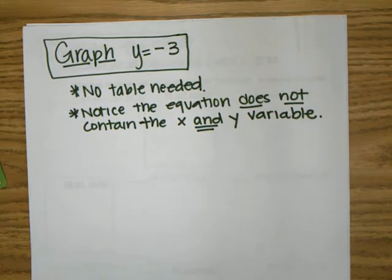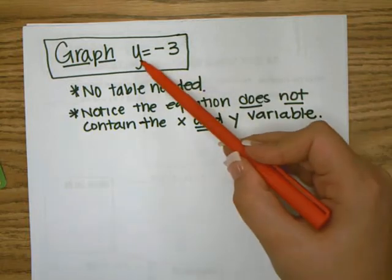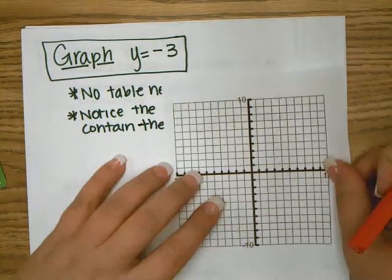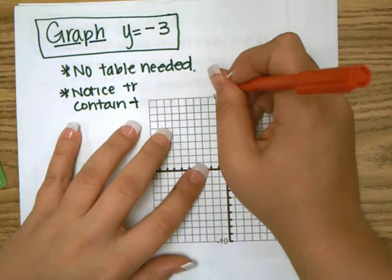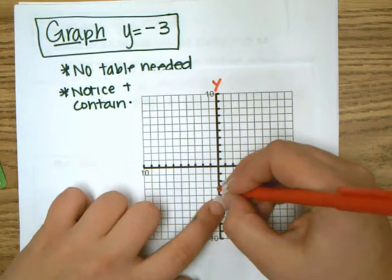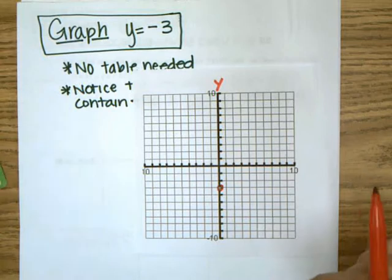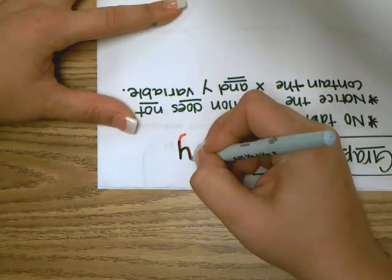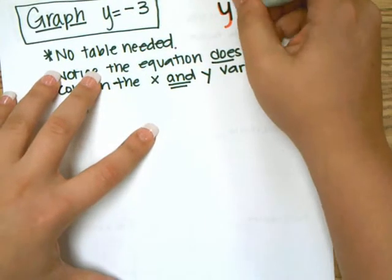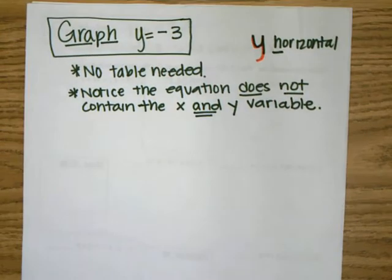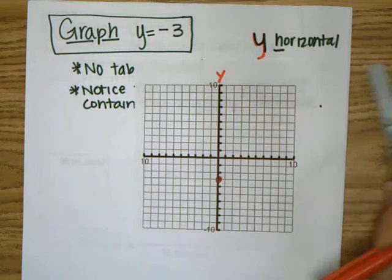The next graph is y equals negative three. There should also be something very noticeably different about this equation — this time there's only a y. When there's only a y, no table is needed. We're going to go to the y-axis and then go down to negative three. And this time, this is going to make a horizontal line. My little way to remember it is when I look at a y upside down, it looks like an h.